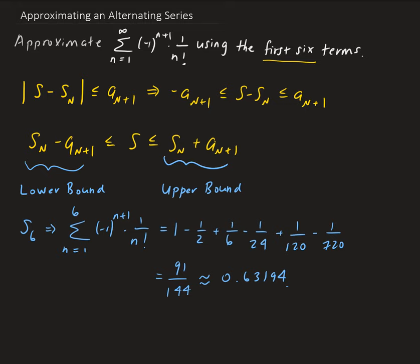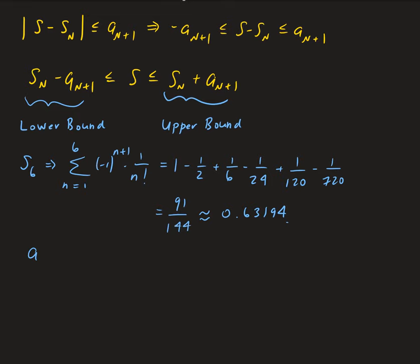Now let's calculate the seventh term. We want to approximate using six terms, so we need the seventh term. The seventh term — since n equals six, n plus one equals seven — is equal to one over seven factorial. One over seven factorial equals one over 5040, which is approximately 0.0002.